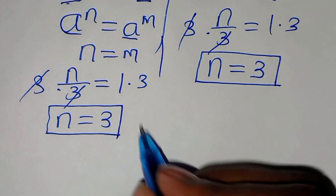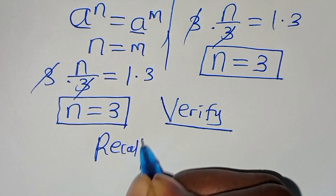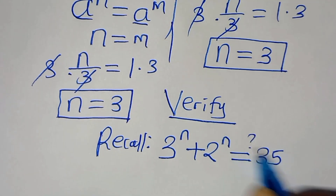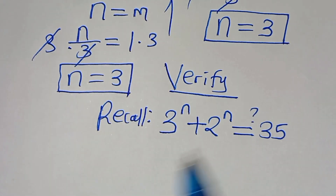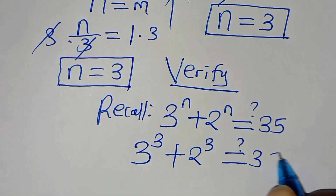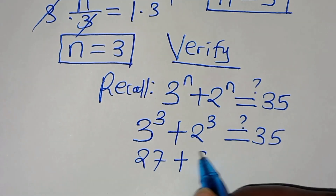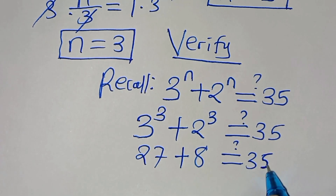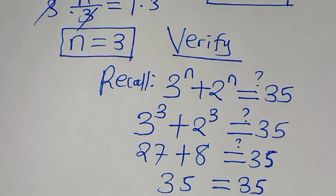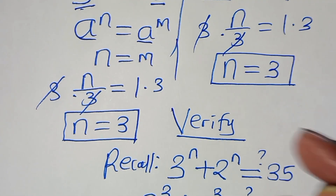Now let's verify that n equals 3 satisfies the equation. Recall 3 to the power of n plus 2 to the power of n should equal 35. Substituting n equals 3: 3 to the power of 3 plus 2 to the power of 3 equals 27 plus 8, which equals 35. The left-hand side equals the right-hand side, and therefore we conclude that n equals 3 satisfies the equation.